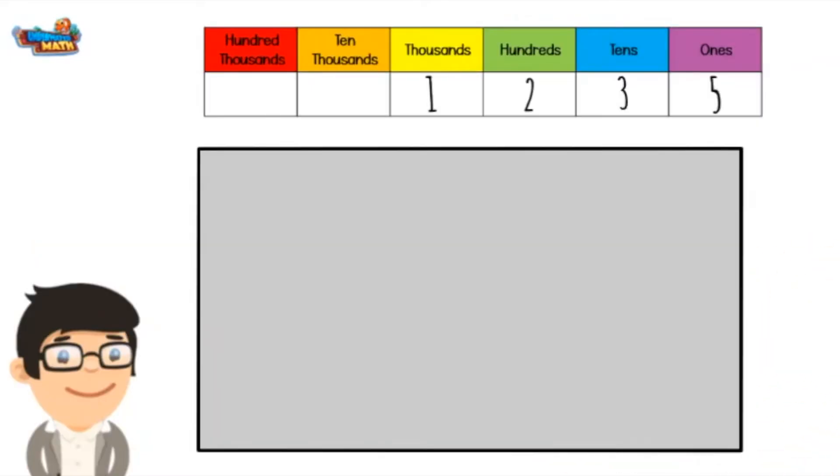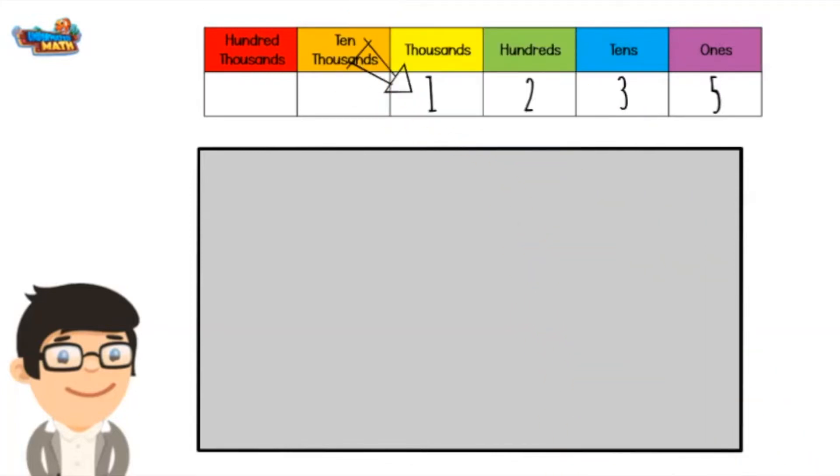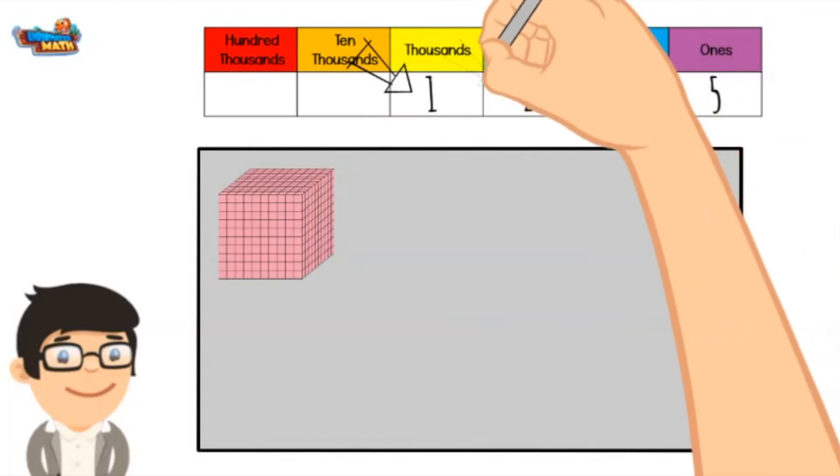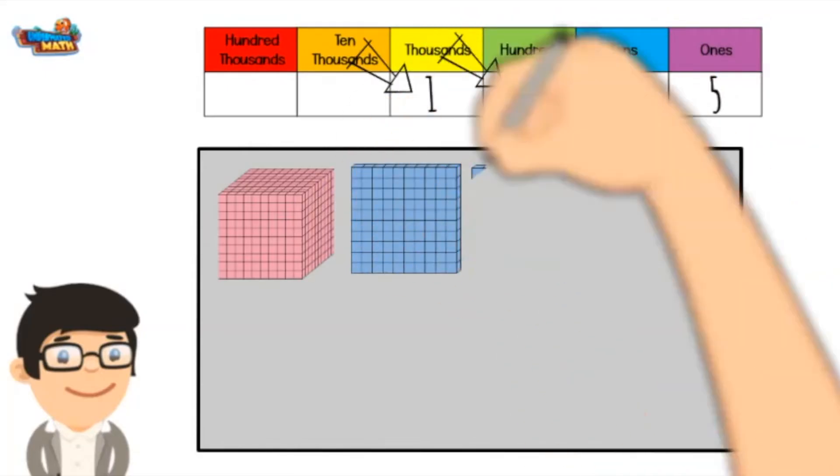Here is the number 1235. Start with the thousands place. There is 1, so we need 1 group of 1000. Next is the hundreds place. There are 2. There are 2 groups of 100.